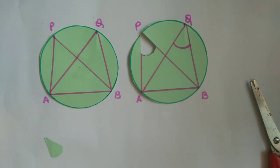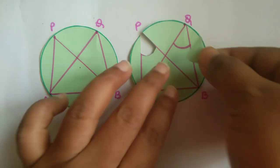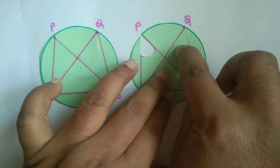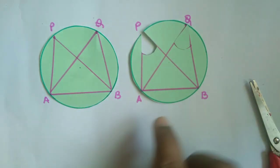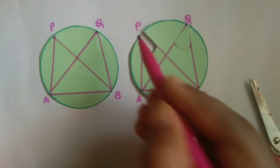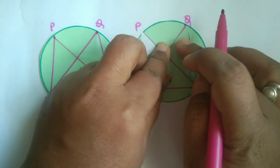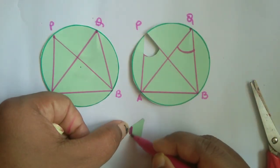The angle which I cut from here, I will place it on angle Q. This shows that the angles are equal. We can conclude that angles on the same segment are equal. This is angle P - we can color this angle.